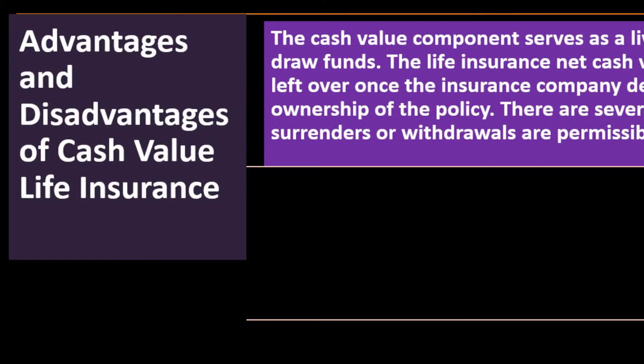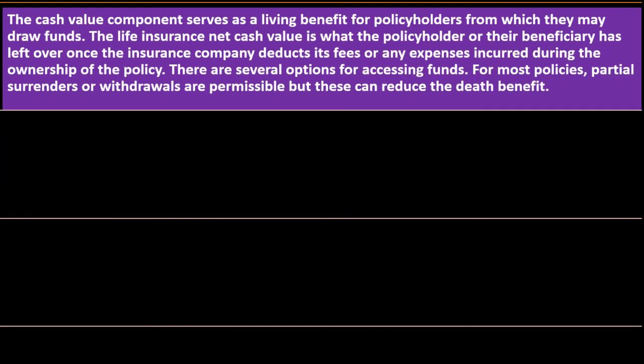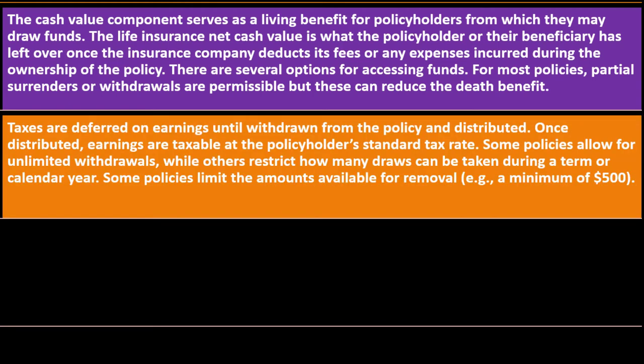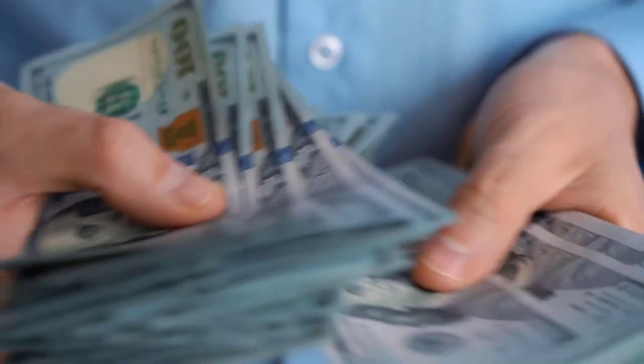The cash value component serves as a living benefit for policyholders from which they may draw funds, acting as a kind of safety net. The net cash value is what the policyholder has left after the insurance company deducts its fees and expenses. For most policies, partial surrenders or withdrawals are permissible, but these can reduce the death benefit. Taxes are deferred on earnings until withdrawal from the policy.